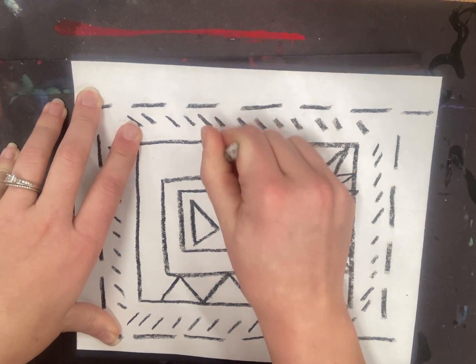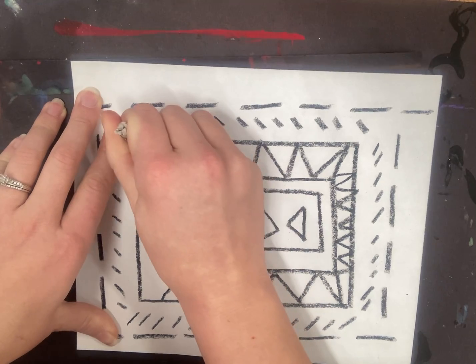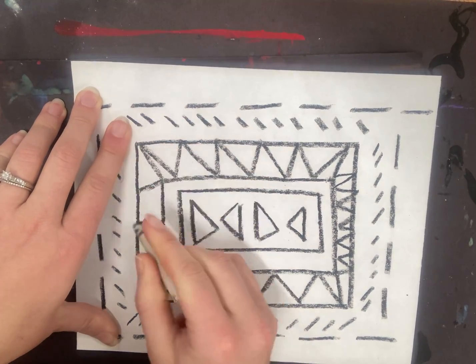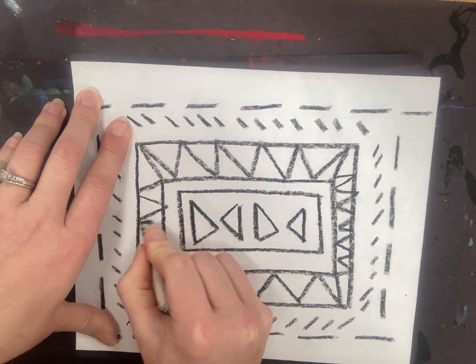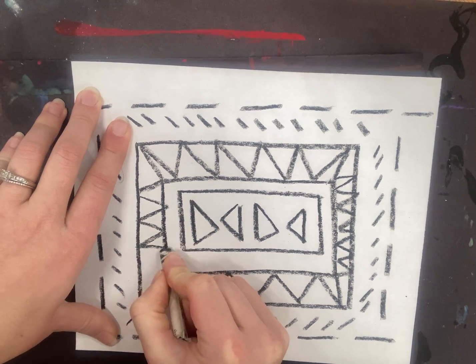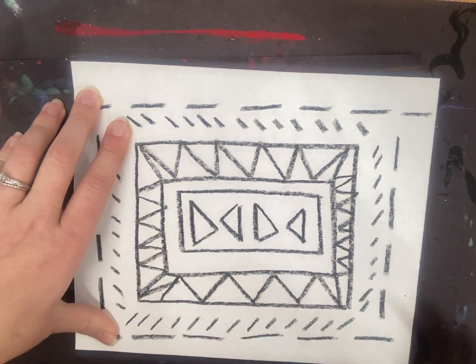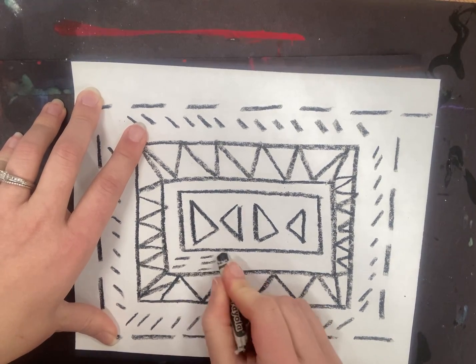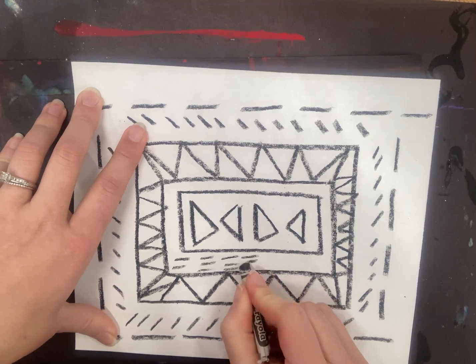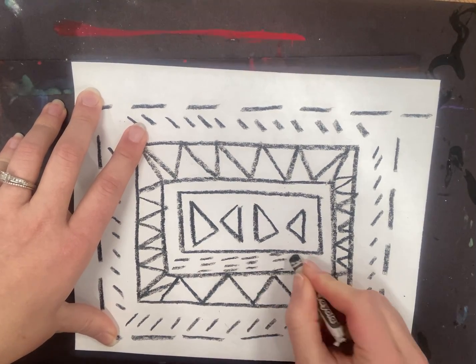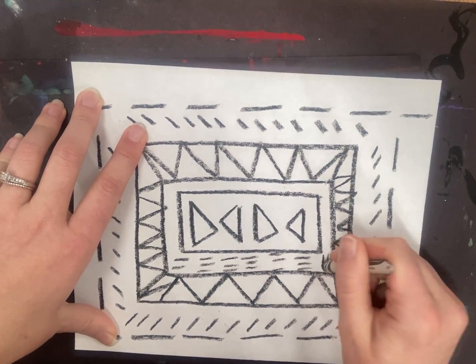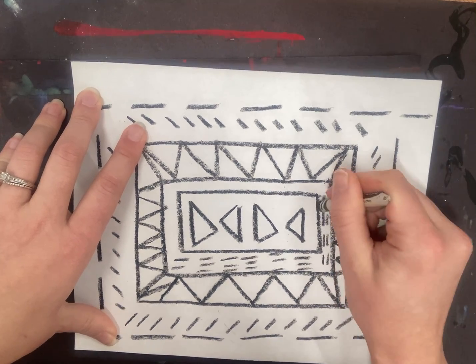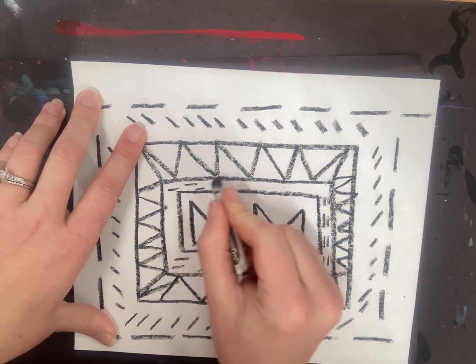Now when you're all done drawing, I would like you to color this today. And you can color with watercolor, crayon, marker, colored pencil, oil pastels, whatever you have on you. I think today I'm just going to stick with crayon. But this would be really, really nice with watercolor too. Get that nice wax resist with the crayons.